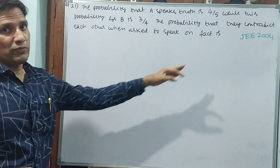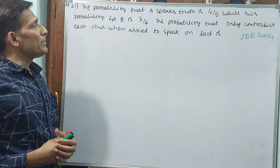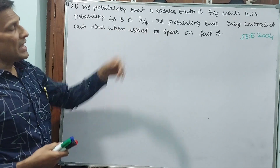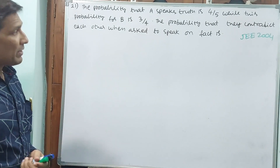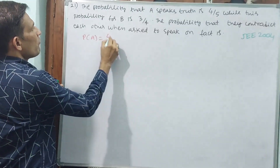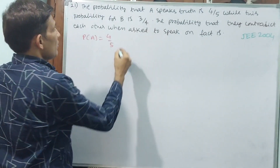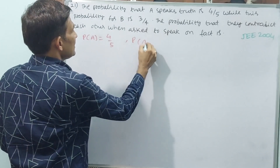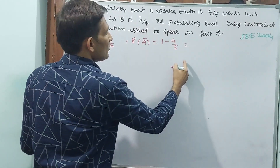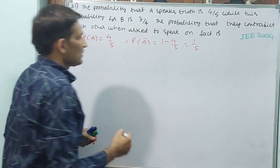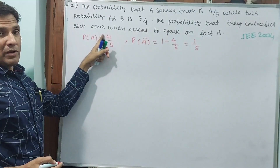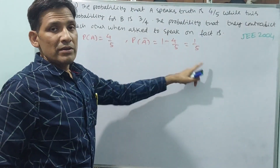This is a JEE 2004 question. The probability that A speaks truth is 4 by 5. Direct probability given: P of A is 4 by 5. I am writing step by step. Probability of A speaks is 4 by 5. Not speaks: 1 minus 4 by 5, that is equal to 1 by 5. If he speaks 5 times, 4 will be true and 1 will be false.